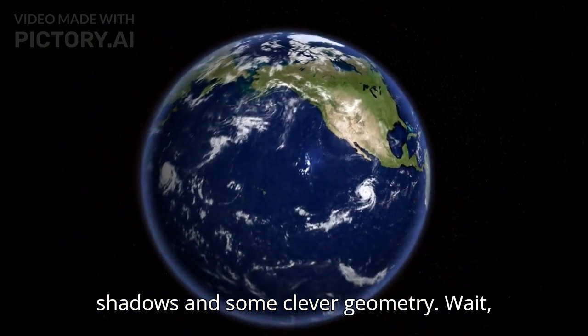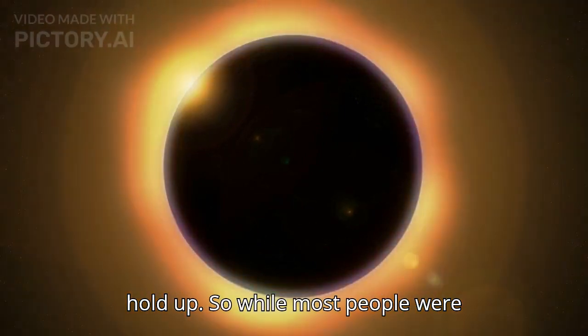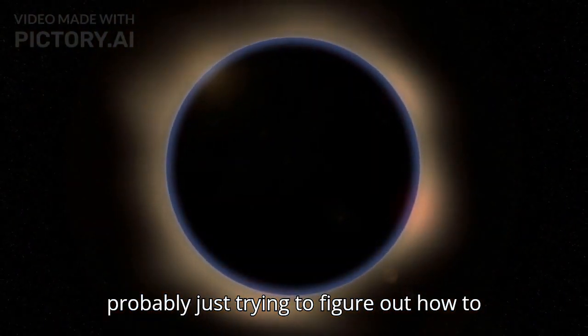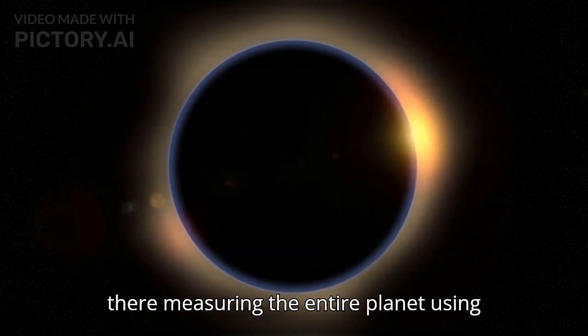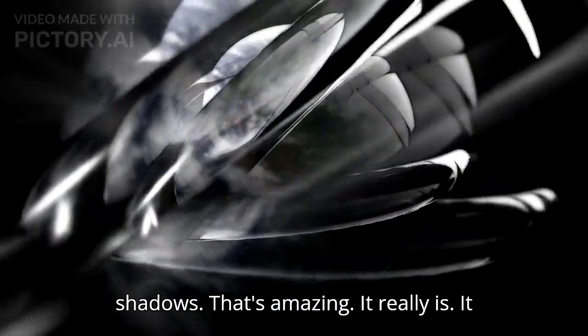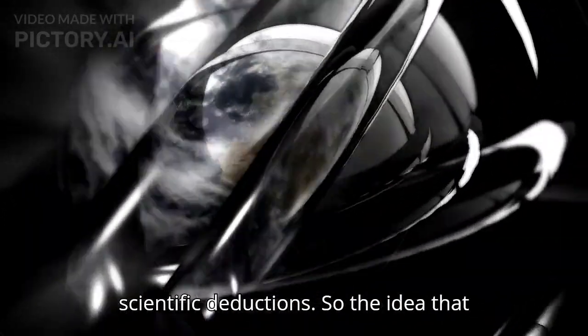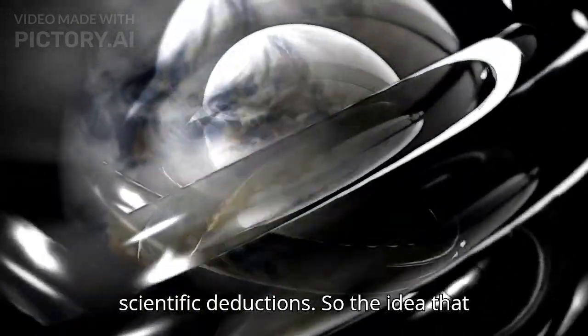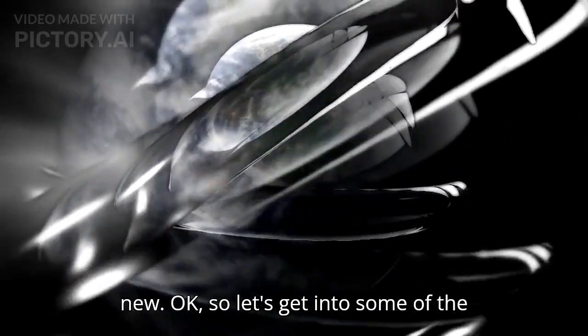This guy actually calculated the earth's circumference in the third century BC and he was surprisingly accurate using just shadows and some clever geometry. Wait, hold up. So while most people were probably just trying to figure out how to build a decent chariot, this guy was out there measuring the entire planet using shadows? That's amazing. It really is.